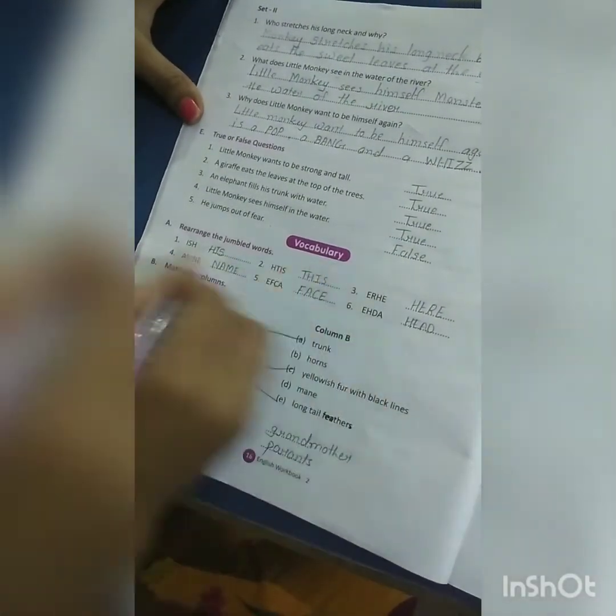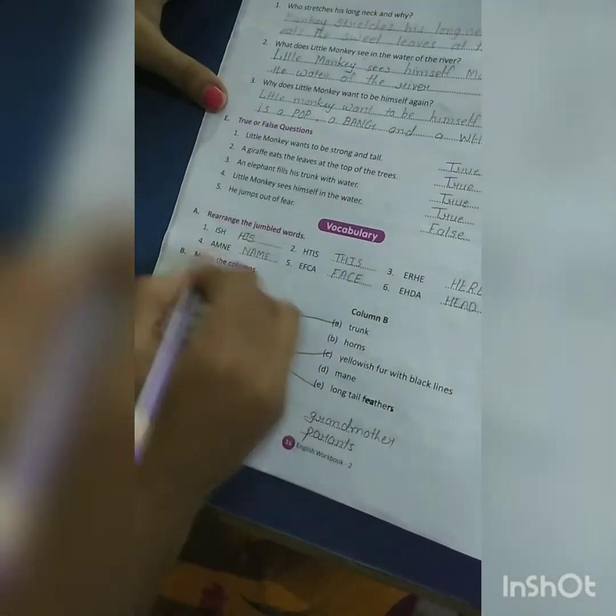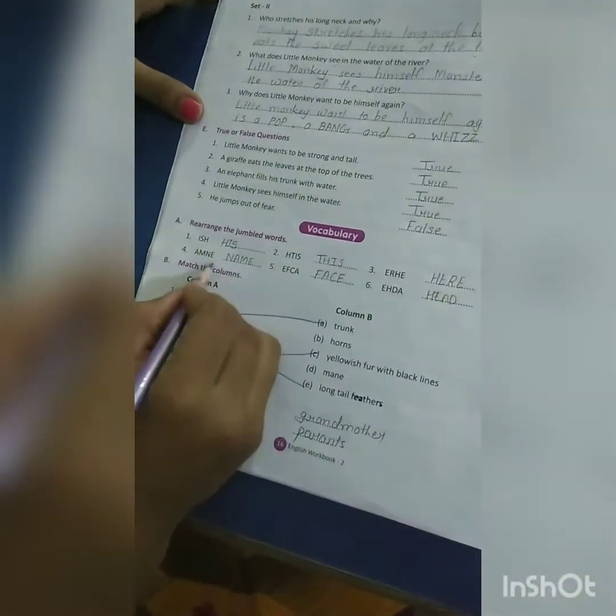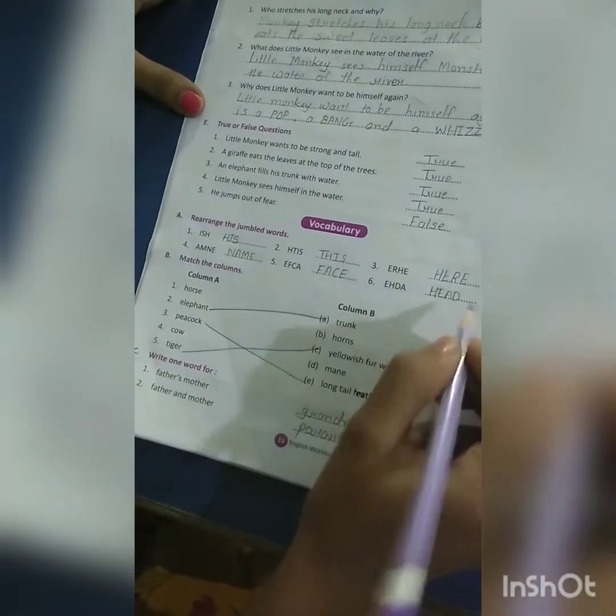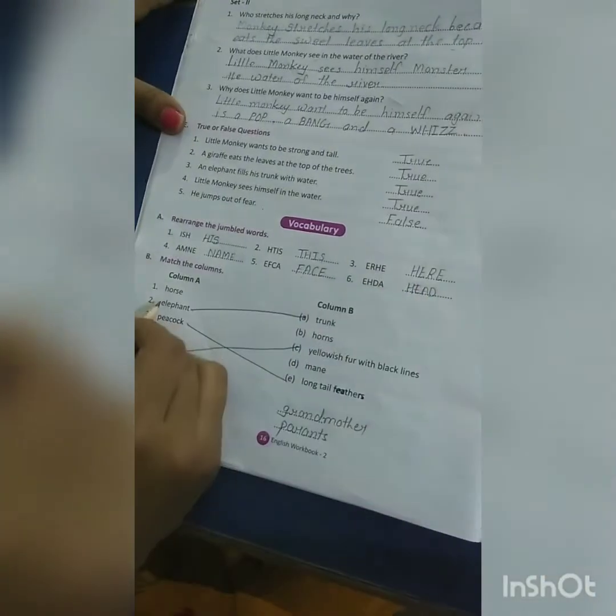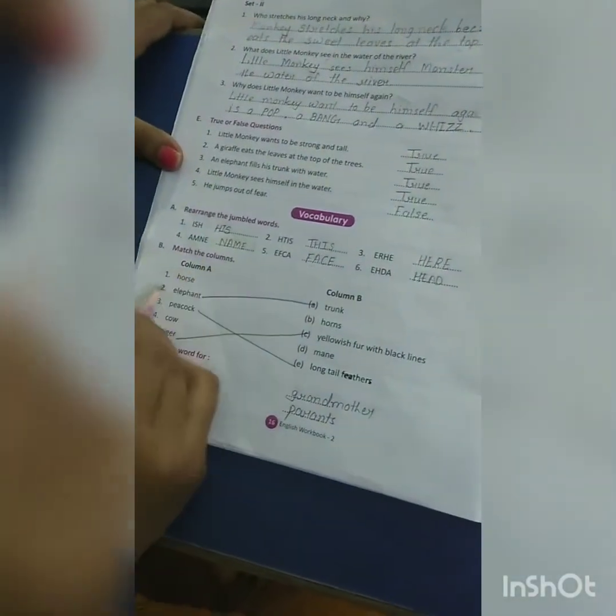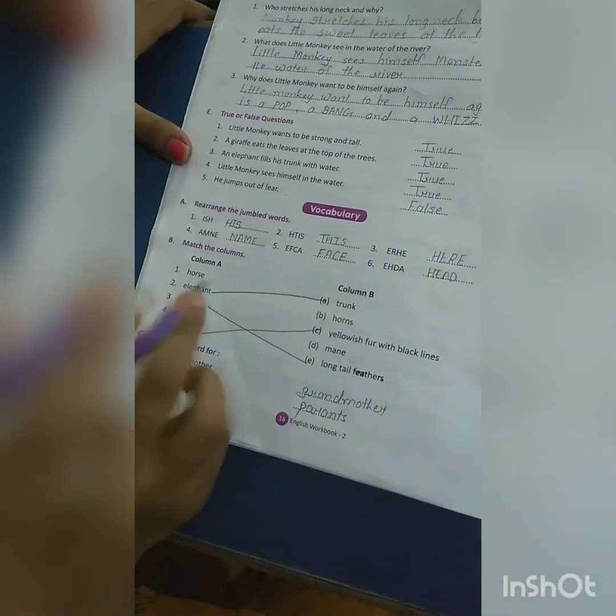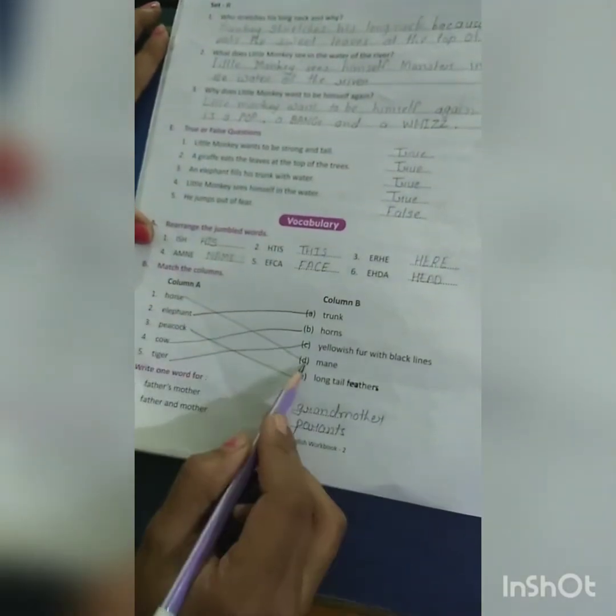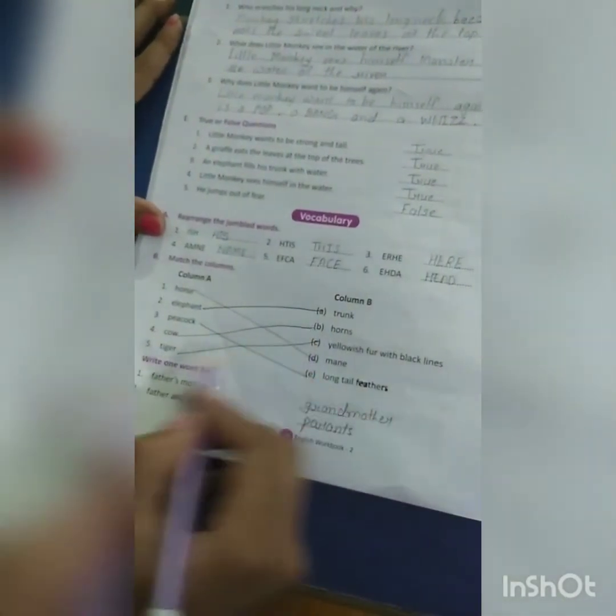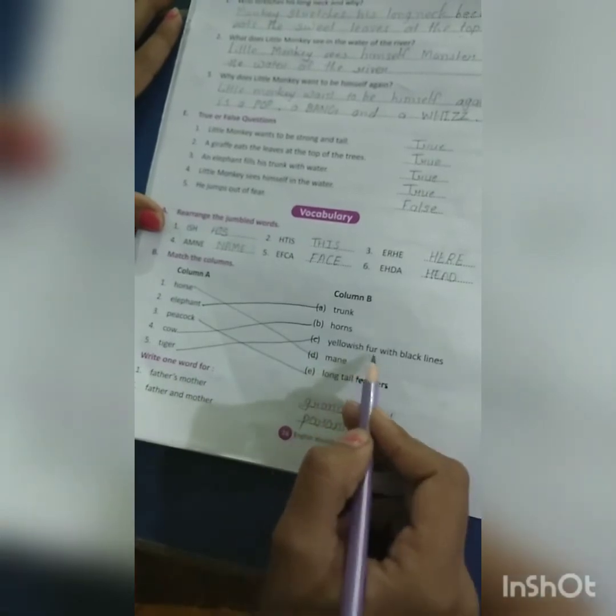Vocabulary. Part A: Rearrange the jumbled words - his, ear, name, face, and head. Match the following, match the column. Horse - mane, elephant - trunk, peacock - long tail feathers, cow - horn, tiger - yellow fur with black stripes.